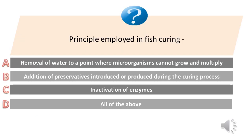Principle employed in fish curing. A. Removal of water to a point where microorganisms cannot grow and multiply. B. Addition of preservatives introduced or produced during the curing process. C. Inactivation of enzymes. D. All of the above. Answer is D. All of the above.